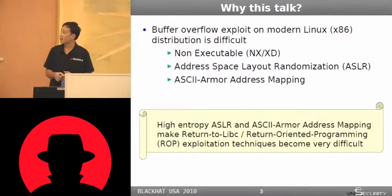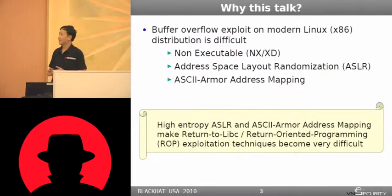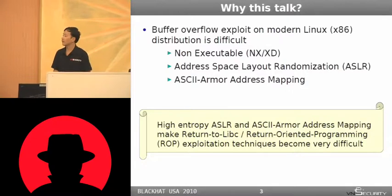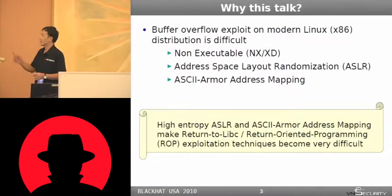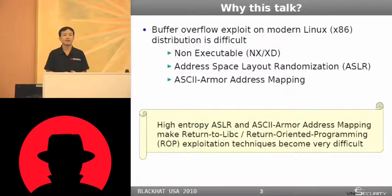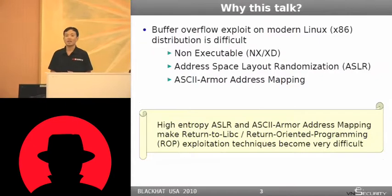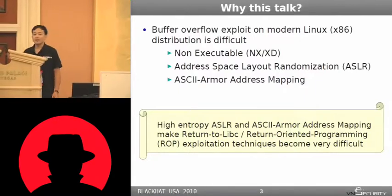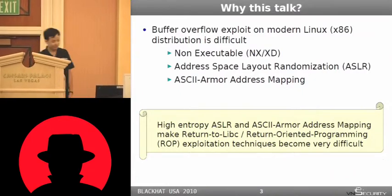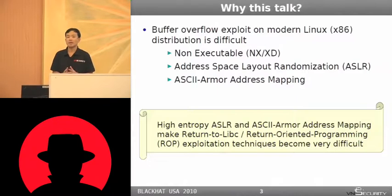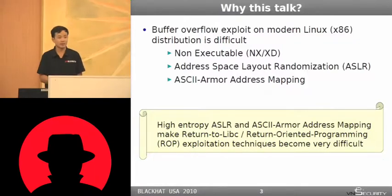So if we can make the exploit work again under these protections, it will be fun. Recently, the most advanced exploitation technique named return-oriented programming was developed to bypass NX, but it seems useless under Linux because of address space layout randomization and ASCII armor address mapping. So if we can make return-oriented exploits work on Linux, it will be more fun. So far, I didn't see any public tool about ROP exploit under Linux, so if we can have a tool, it may be useful for both researchers and attackers.